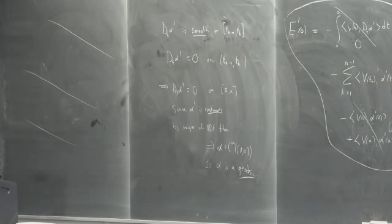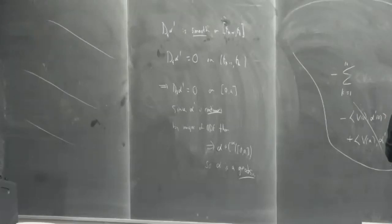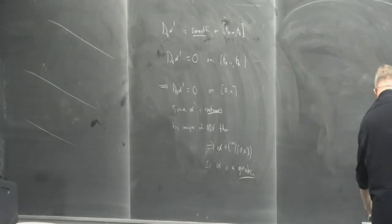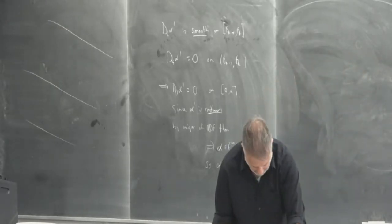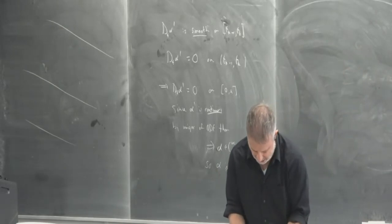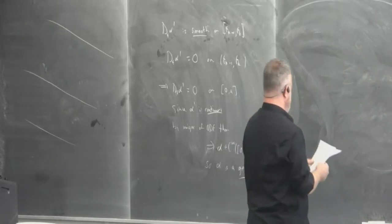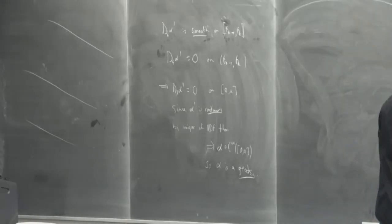To summarize: a piecewise smooth curve alpha is critical with respect to all proper variations if and only if it is a geodesic. We've characterized geodesics as critical points with respect to the first variation formula — the derivative at S equals zero of any proper variation vanishes. Once we've taken one derivative, we might as well take two. The second derivative is what we compute next.